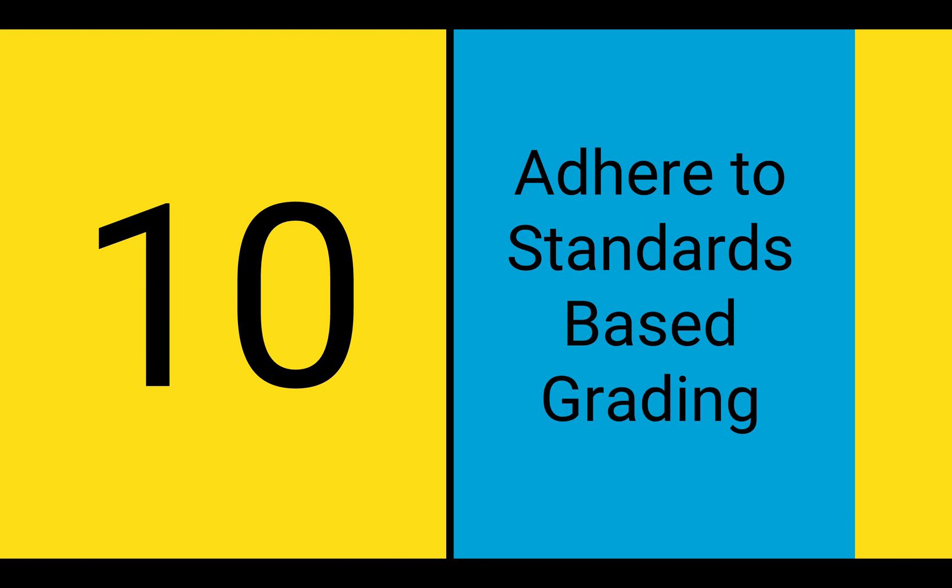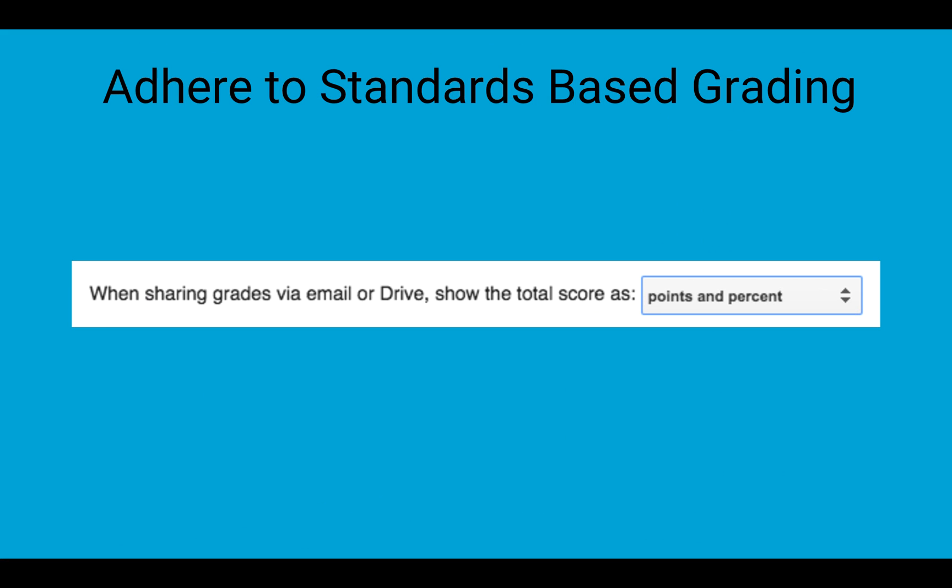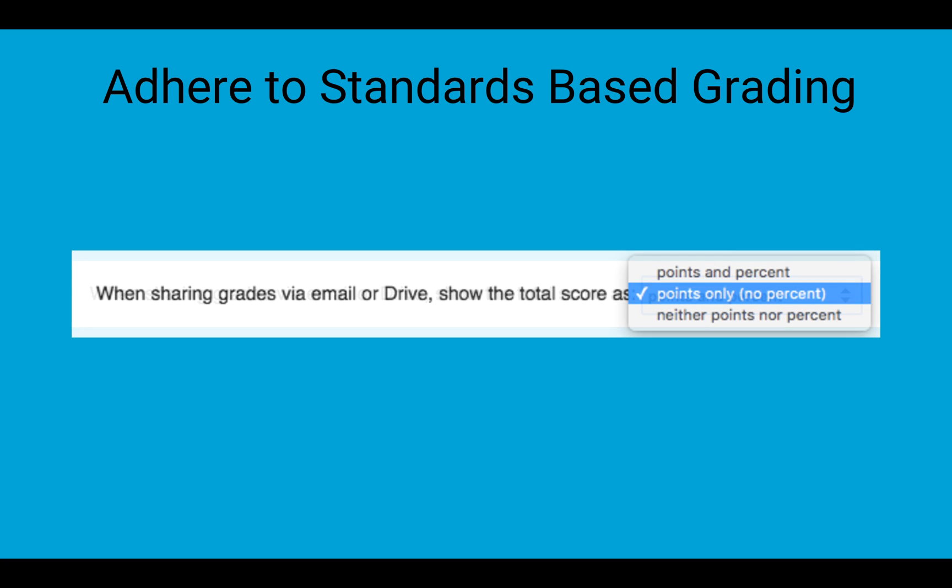Number 10. Adhere to Standards-Based Grading. By default, Fluberoo will show when sharing grades the student's score in both points and percent at the top of their Drive document or email. But if your school uses standards-based grading, you may not want to show this. Instead, from the Advanced Options, you can choose to show the points only with no percent, or to show neither points nor percent. If you choose the latter option, be sure to at least include some sort of score or grade to the student when assigning them individual feedback.